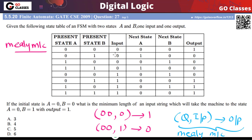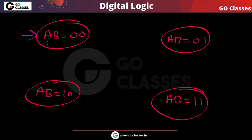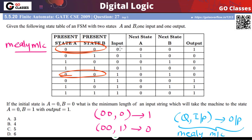Now let's create the state diagram. If your current state is 0,0 and you read input 0, you will go back to state 0,0 and the output will be 1.